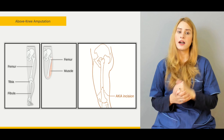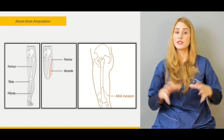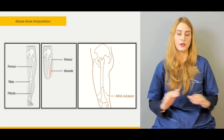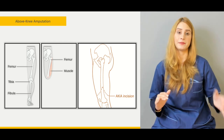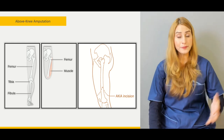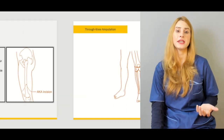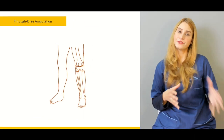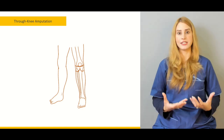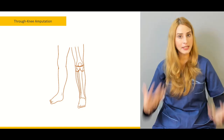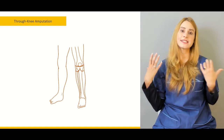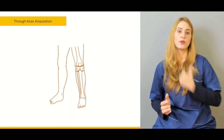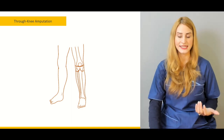For above-knee amputations, we'll discuss the level of the incision, the flap — particularly the equal anterior procedure — and what procedure to adopt for ischemic versus non-ischemic limbs. We'll also cover through-knee amputations or knee disarticulations, which are becoming more common. In through-knee amputations you save the whole length of the femur and the patella, which you do not save in below-knee or above-knee amputations.